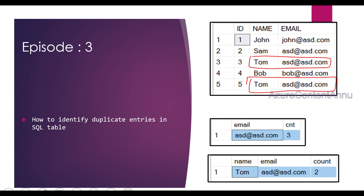What we want is to identify duplicate entries in two ways. First, we want to see which Email IDs have more than one entry. And then, we want to identify all duplicate records for the combination of Name and Email ID. So let's write the SQL queries to identify duplicates for a single column first, and then for a combination of multiple columns.